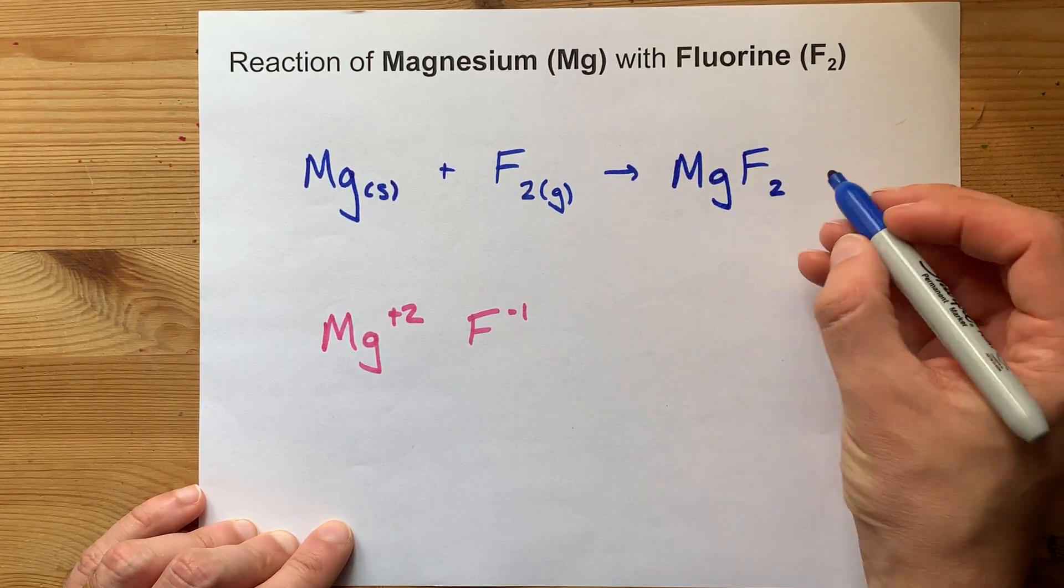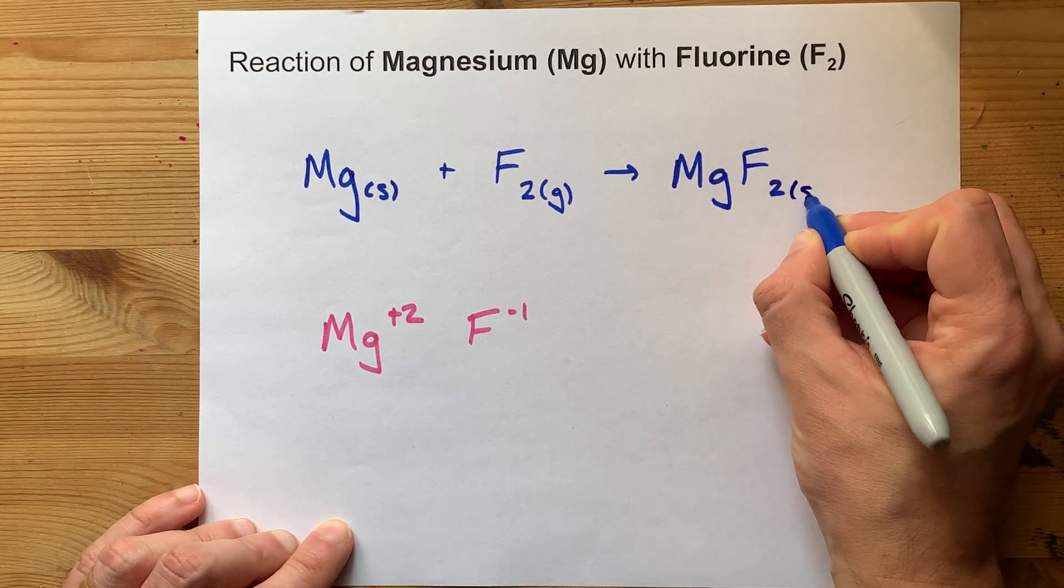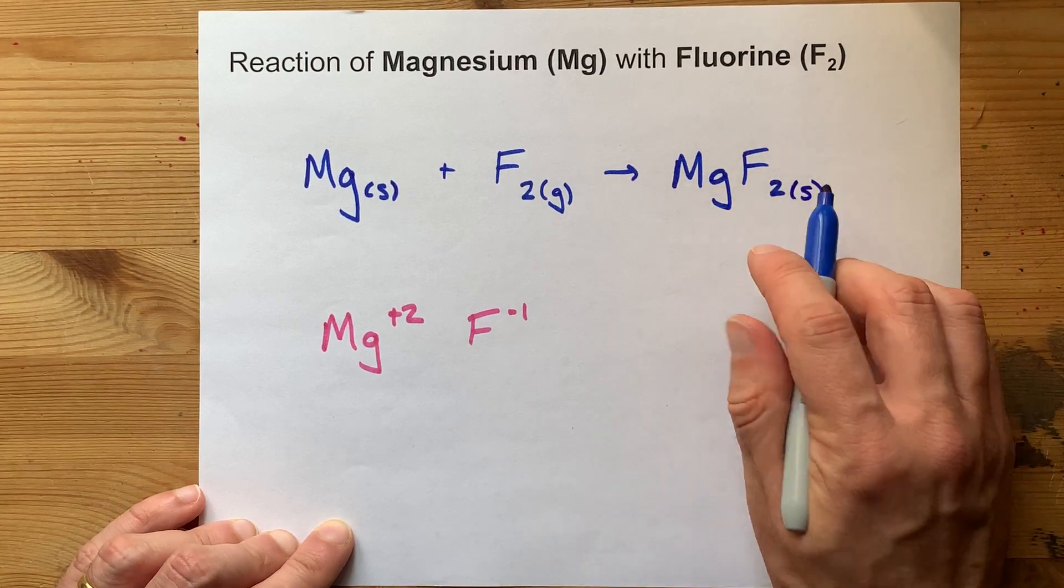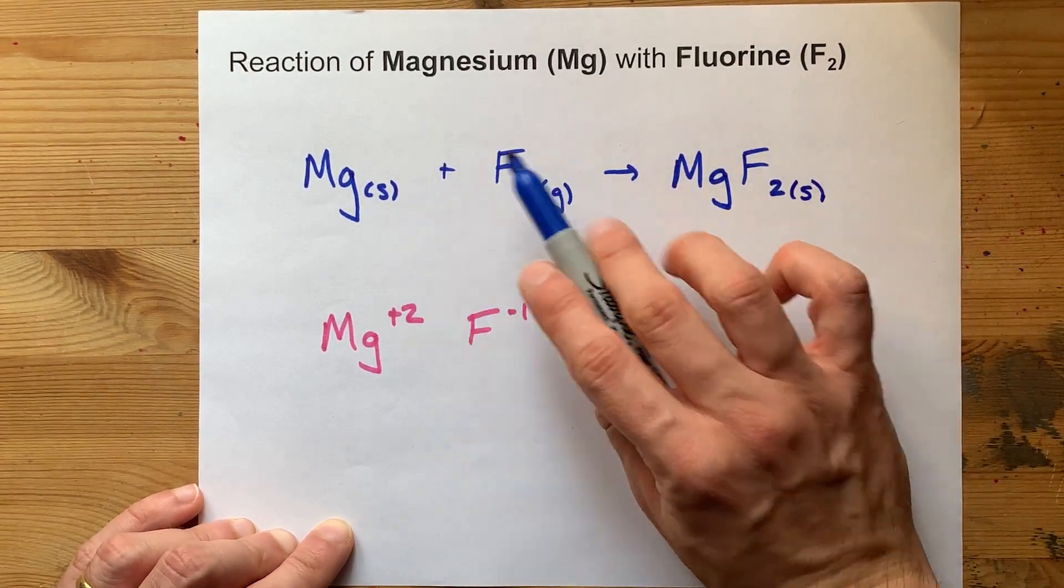It's an ionic compound, which is almost always a solid at room temperature. The only exception is when there's water around, but there's definitely no water here.